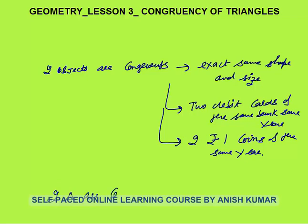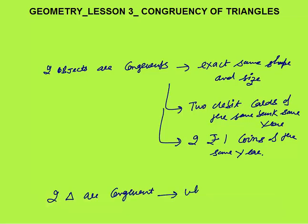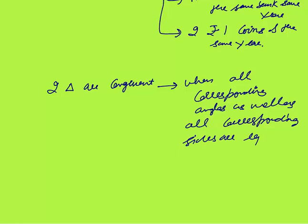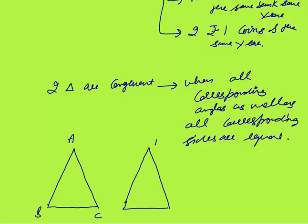Two triangles are congruent when all corresponding angles as well as all corresponding sides are equal. For example, let me make two triangles — triangle 1 with vertices A, B, C and triangle 2 with vertices D, E, F.